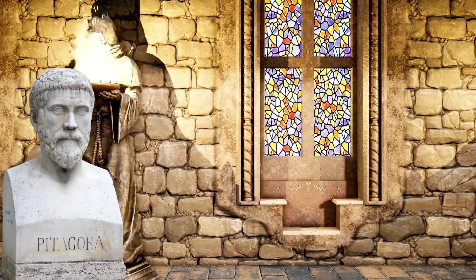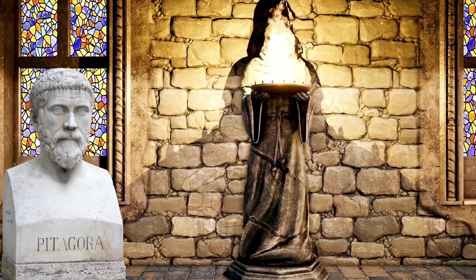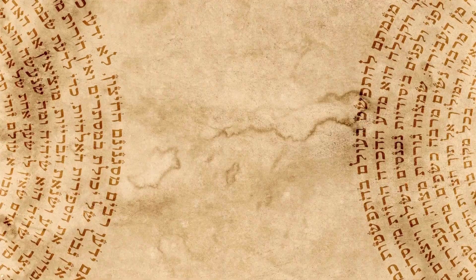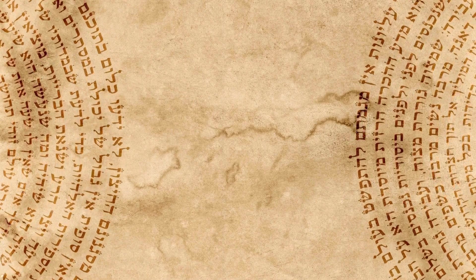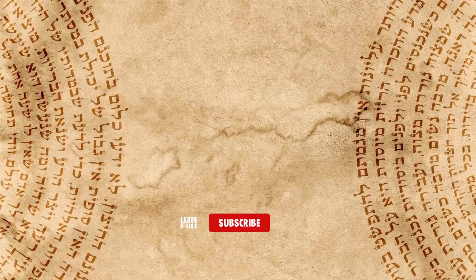For example, they did not eat meat because they thought that a human soul could also pass into an animal body. Pythagoras and his students believed that the soul should be developed and purified. Pythagoras thought that this would only be possible by doing philosophy.